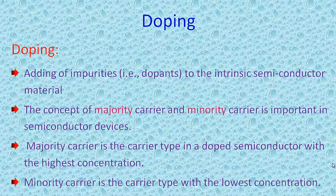Next, doping. Adding impurities to an intrinsic semiconductor is called doping, and this is how we make extrinsic semiconductors. The concepts of majority carriers and minority carriers play a role here. The majority carrier is the carrier type in a doped semiconductor with the highest concentration, while the minority carrier has a lower concentration compared to majority carriers.